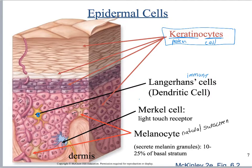About 10 to 25 percent of the stratum basale are melanocytes — it's not a lot of cells. Everybody has about the same number of melanocytes; what really differs is how much melanin is secreted and what type of melanin is secreted.